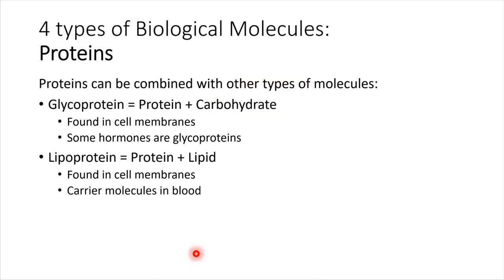Proteins are interesting because they can combine with other types of biological molecules. We can combine proteins and carbohydrates — attach a bit of carbohydrate onto a protein — and the result is called a glycoprotein. We will be talking about glycoproteins going forward. There are a lot of glycoproteins in cell membranes, and they have important roles with cell communication and the cell being able to interface with its environment. Lipoproteins are a combination of a protein with a lipid, and these are also found in cell membranes.